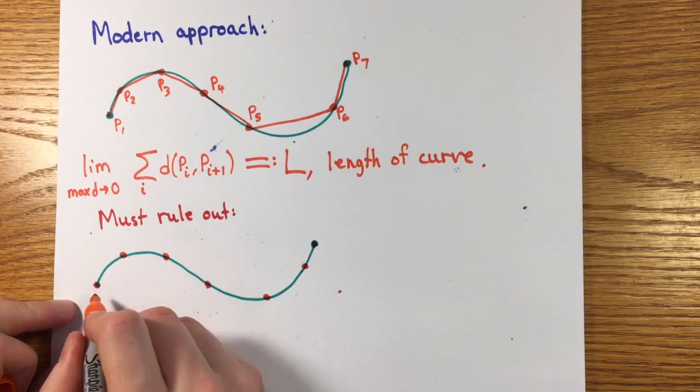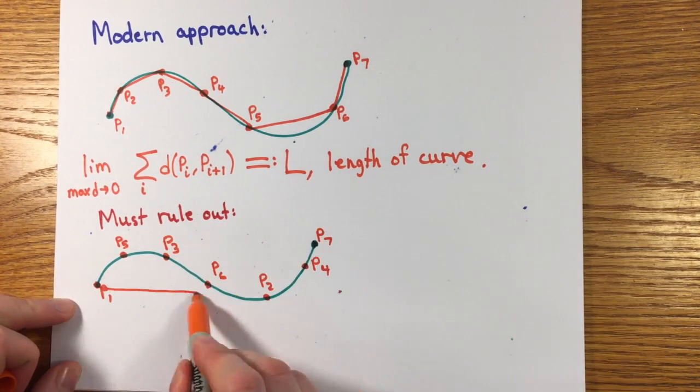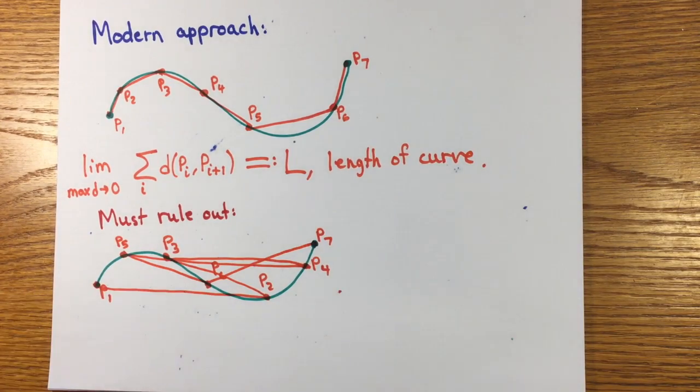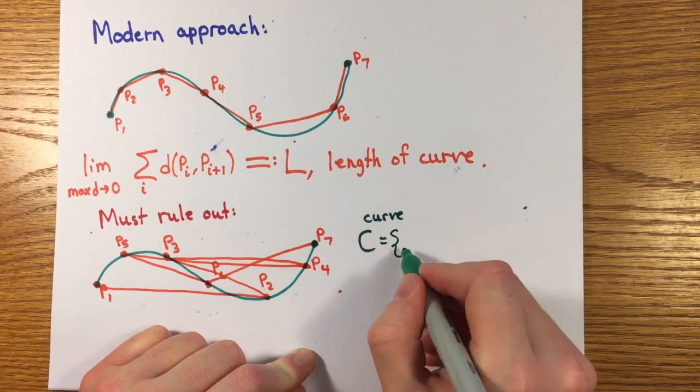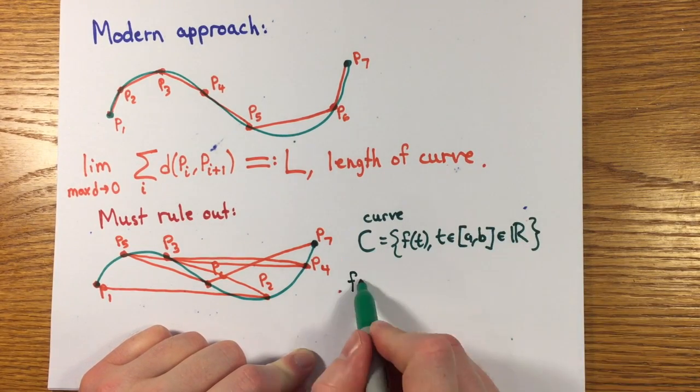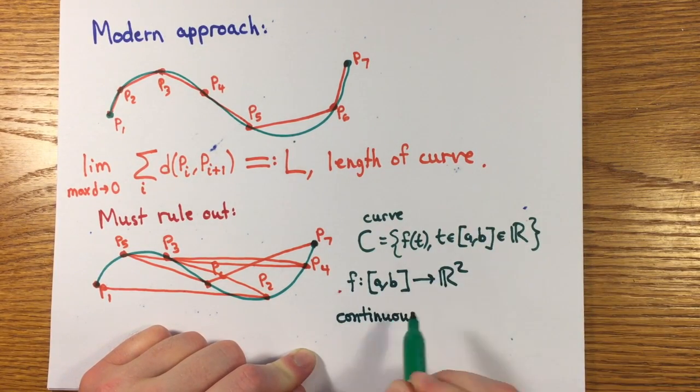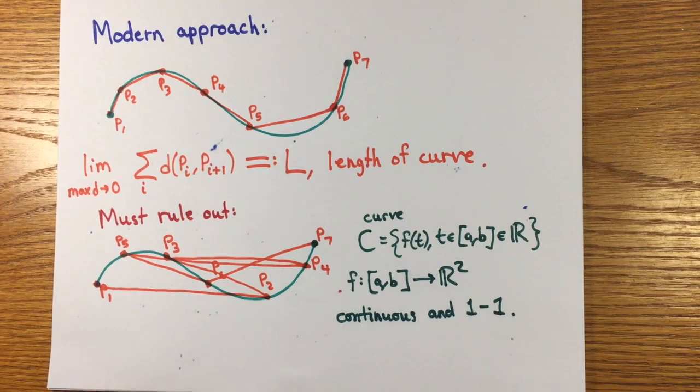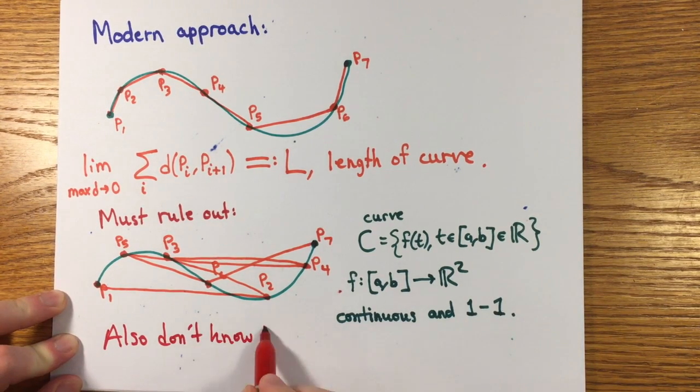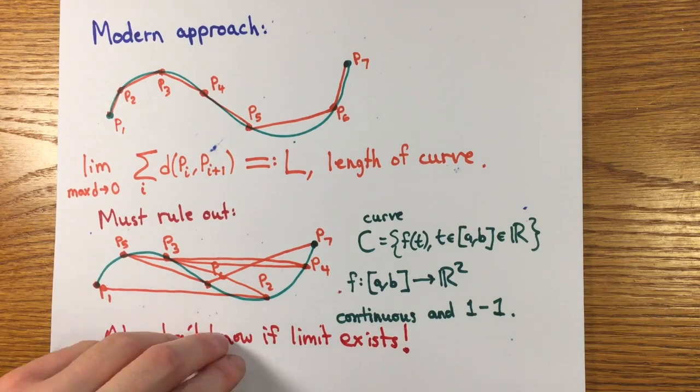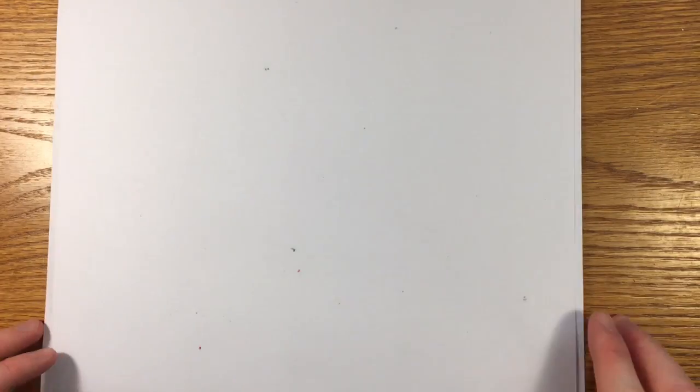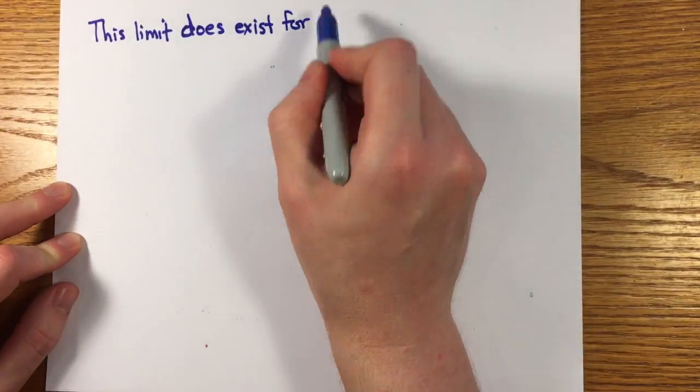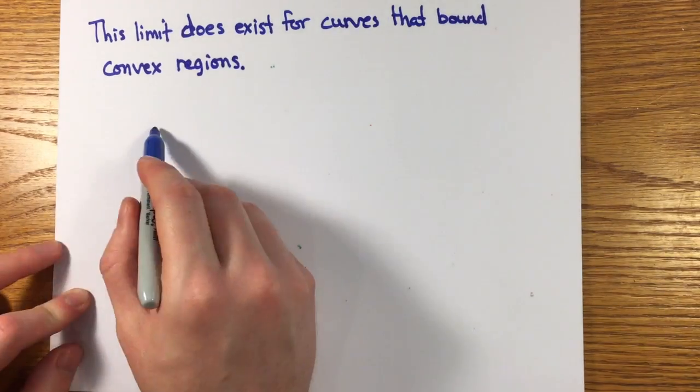This involves two moves the Greeks didn't make. First, to make sure the points are taken in the right order, you actually need the curve to be the image of a one-to-one continuous function from an interval into the plane and a partition of the interval to give the points. And second, you need to consider limits in the abstract without a procedure for determining whether they exist.